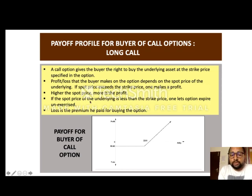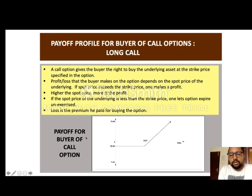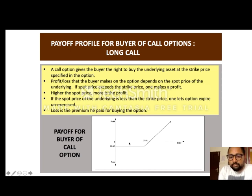A call option gives the buyer the right to buy the underlying asset at the strike price specified in the option. Profit or loss depends on the spot price of the underlying. If the spot price exceeds the strike price, one makes a profit — the higher the spot price, the more the profit. If the spot price is less than the strike price, the option lapses and the loss is the premium paid. Here the buyer paid a premium of Rs. 86.60 and the strike price is 2250 — profit is made if the price rises above 2250, and if it falls below 2250, the loss is the premium.